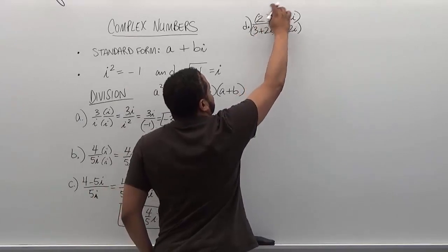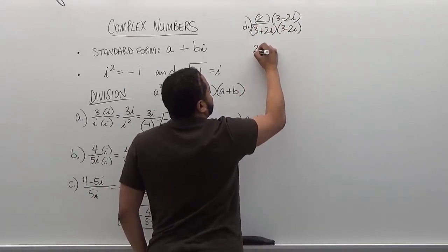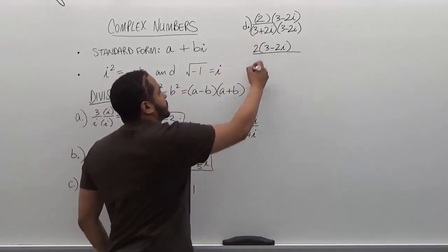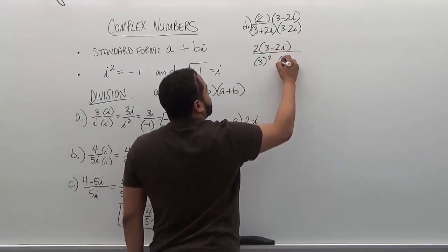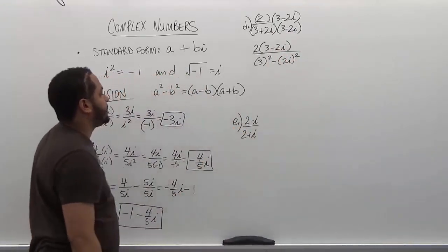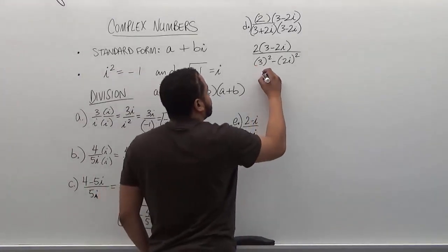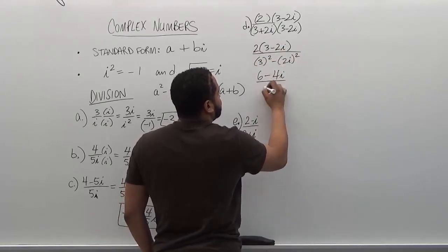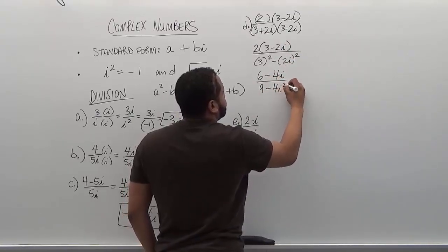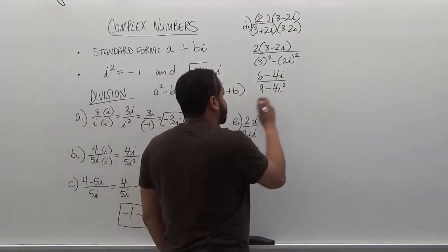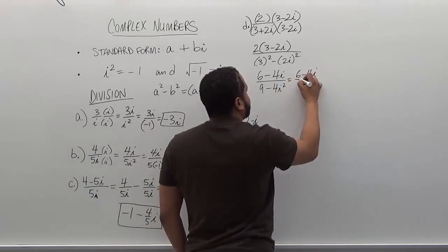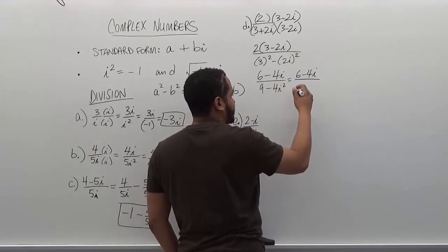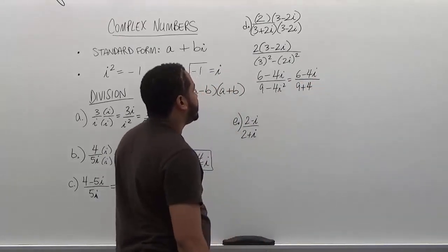On the numerator we can multiply these out, and on the bottom we have the difference of two squares. The first term is three so we have three squared, and the second term is 2i, so we have (2i)². They subtract from each other. So with distribution on top we get six minus 4i. On the bottom we have nine minus 4i². Remembering that i² becomes negative one, negative one times negative four is positive four. So the denominator becomes nine plus four, which is 13.